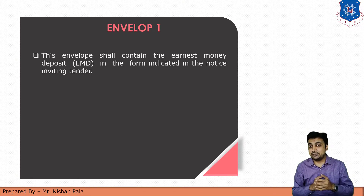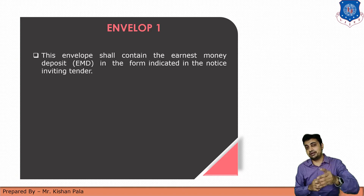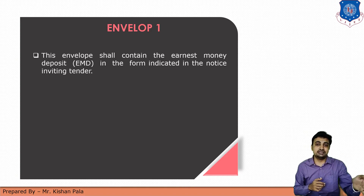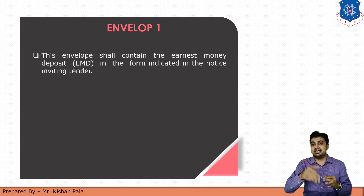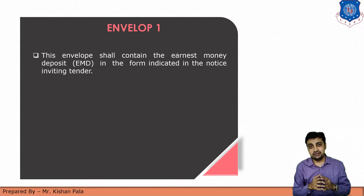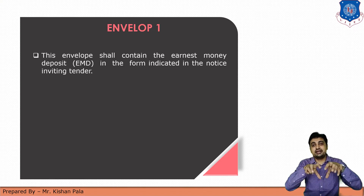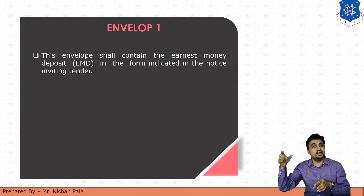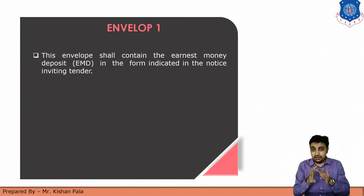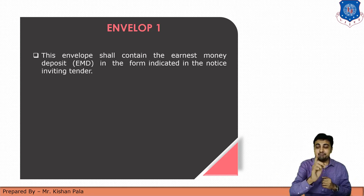Security deposit is collected from the contractor because the contractor has to fulfill the terms and conditions mentioned in the contract. If he does not follow or does not maintain the quality of the work, the security deposit will not be refunded to the contractor. In the first envelope, it contains the Earnest Money Deposit as mentioned in the tender inviting notice. If the contractor fails to include EMD, the tender will be rejected from that construction firm.